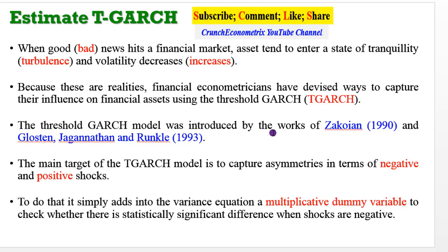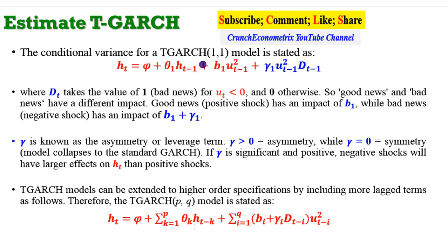Because these are realities, financial econometricians have devised ways to capture their influence using the Threshold GARCH. The T-GARCH model was introduced by the works of Zakoian (1990) and GJR (1993). The main aim of the T-GARCH model is to capture asymmetries in terms of both negative and positive shocks. This is done by including in the variance equation a multiplicative dummy variable, to check whether there is a statistically significant difference when shocks are negative. Here we have the conditional variance for a T-GARCH(1,1) model, which includes a multiplicative term — a dummy variable multiplied by the lagged squared error term — to capture asymmetry.